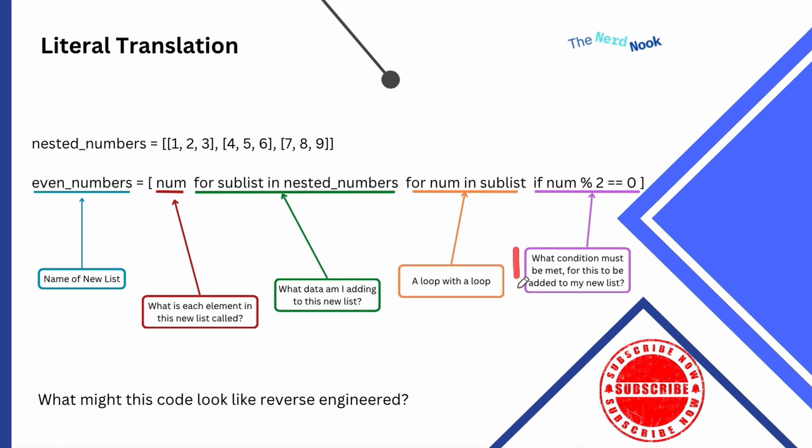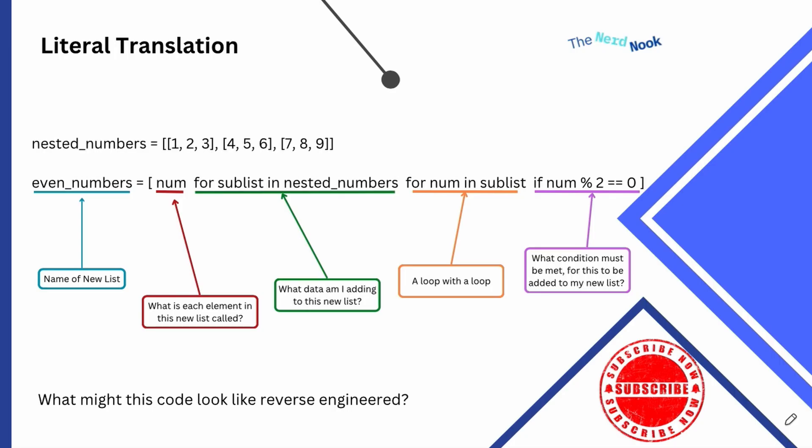And finally, I'm adding what condition must be met in order for a number to be added into this new list. That condition goes at the very end of our comprehension — loop in a loop with a condition. That's pretty standard Python code, just done here in one line.